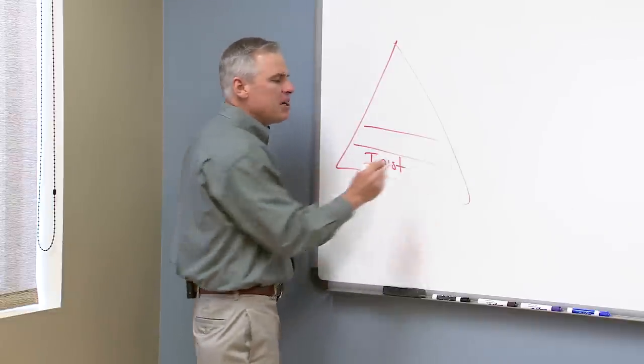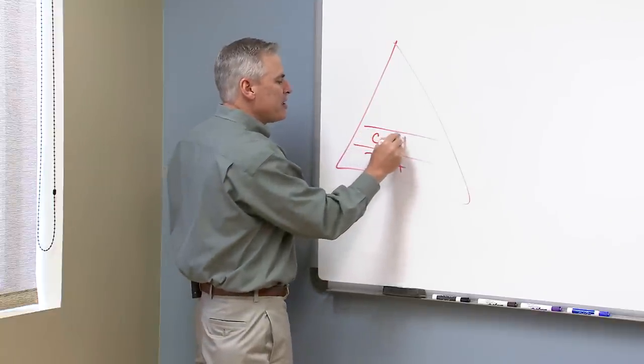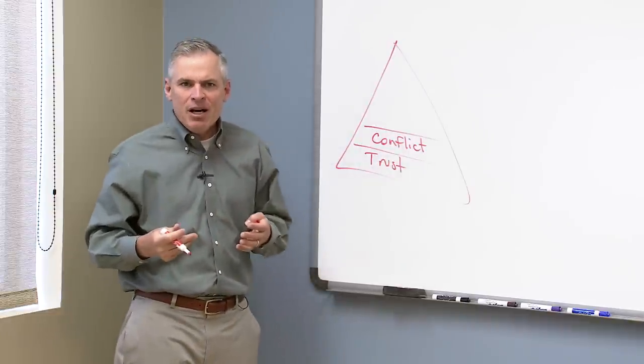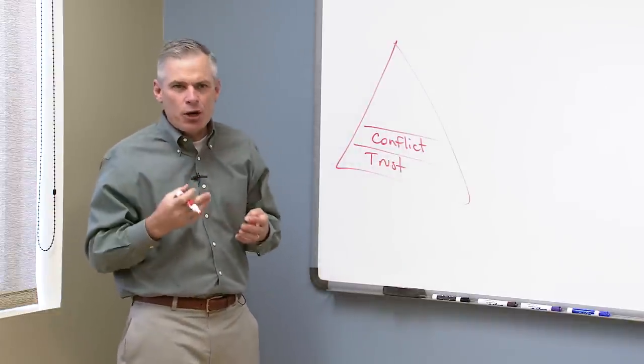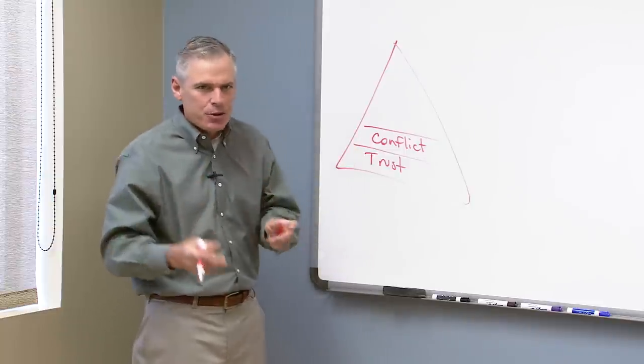By building trust, they put themselves in a position to embrace the next behavior, which is conflict. Good, healthy, productive conflict is a sign of a great team. A cohesive team has to be able to argue. But because they trust one another, they know that that argument is nothing but the pursuit of truth.